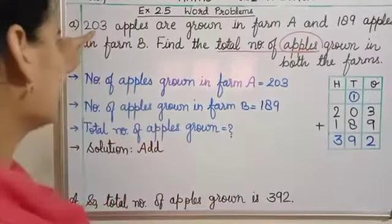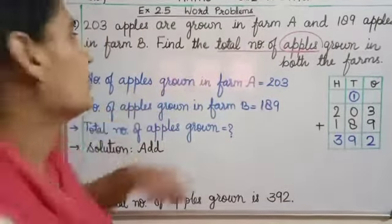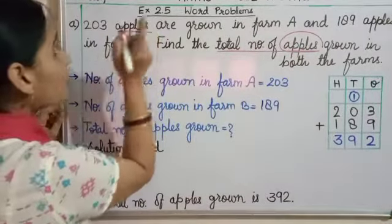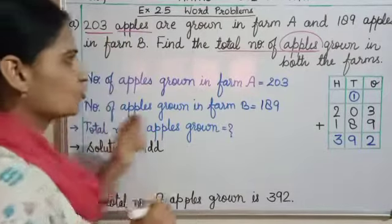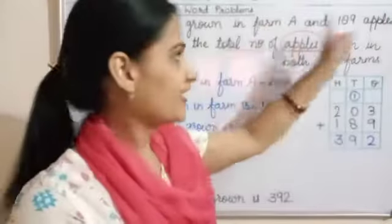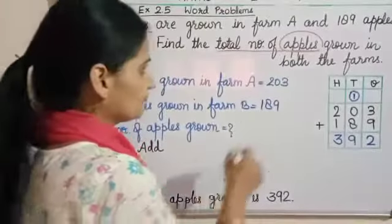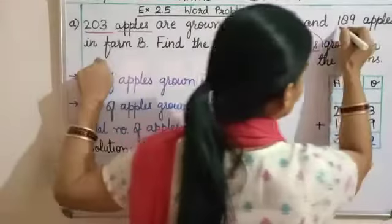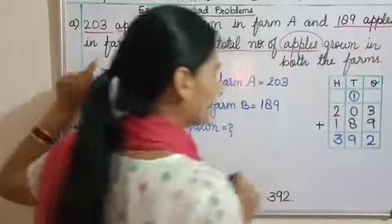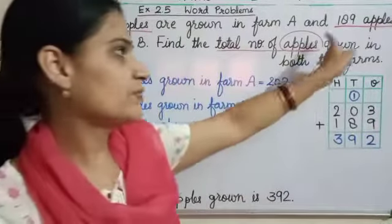Phir se read karte hai: 203 apples are grown in farm A — hume apples mila, aur hain kitne? 203, jo farm A mein ughaaye ja rahe hain. 189 are grown in farm B — 189 bhi apples hai, isko bhi underline karenge.